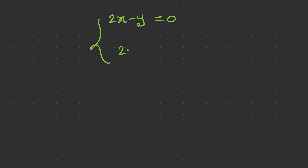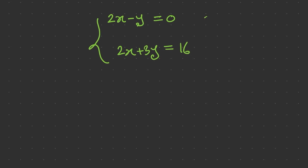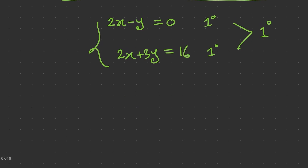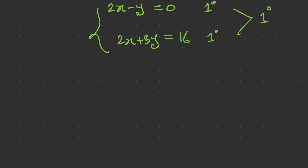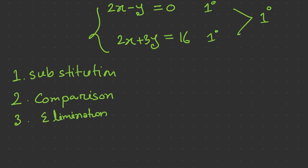the second equation is 2x plus 3y equals 16. The degree of both equations is 1, which means the degree of the system is also 1. As we already discussed, if the degree is 1 we call it a linear system, and there must be a common solution for both equations. We can solve this system three different ways: number one is substitution, number two is comparison, and number three is elimination.